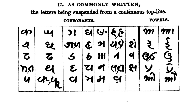All Kaithi consonants have an inherent vowel. Kaithi vowels have independent and dependent diacritic forms. Several diacritics are employed to change the meaning of letters. Kaithi has several script-specific punctuation marks; general punctuation is also used with Kaithi. A plus sign can be used to mark phrase boundaries.